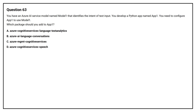Question number 63. You have an Azure AI service model named Model 1 that identifies the intent of text input. You develop a Python app named App 1. You need to configure App 1 to use Model 1. Which package should you add to App 1? Option A: azure-cognitiveservices-language-textanalytics. Option B: azure-ai-language-conversations. Option C: azure-mgmt-cognitiveservices. Option D: azure-cognitiveservices-speech.